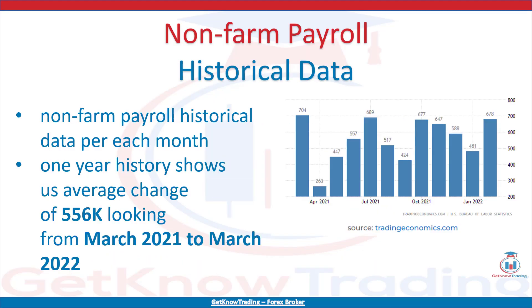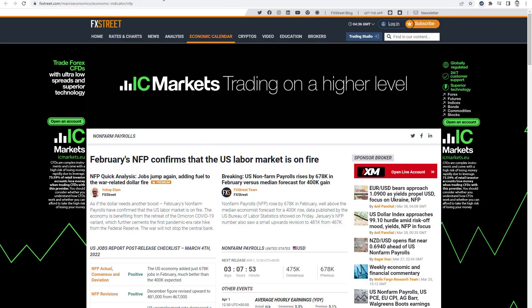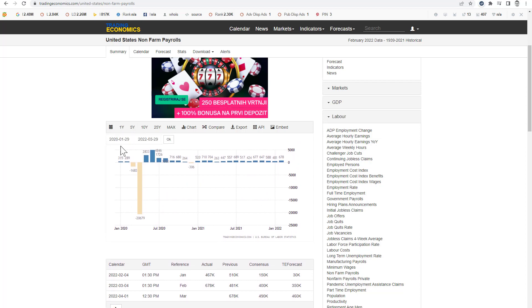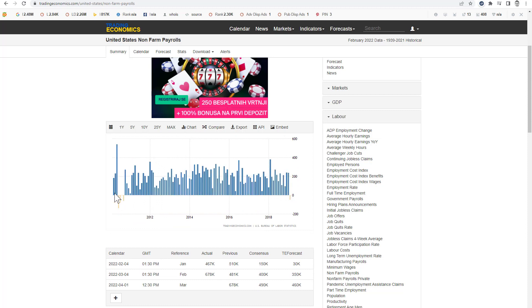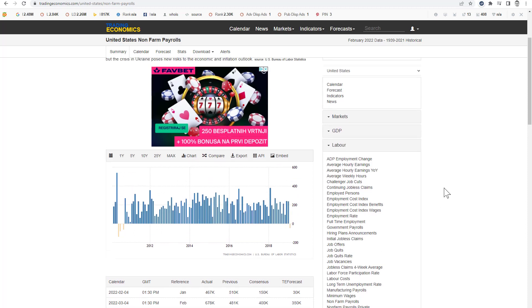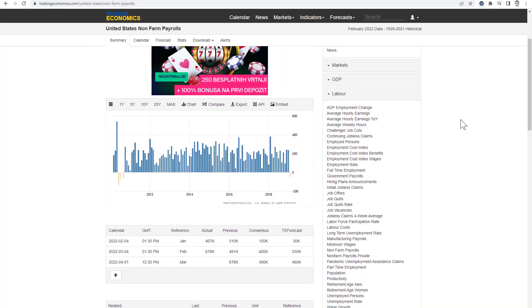Let me show you non-farm payroll historical data, where you have a year's data on the graph. You can see non-farm payroll historical data per each month, and above each column you have a number in thousands. Last month's change was from 481,000 to 678,000. The one-year NFP history shows an average change of 556,000, looking from March 2021 to March 2022. The 2-year historical data shows that April 2020 was the worst period with negative results because of Covid. If you remove 2020 with its large negative data, you can see the previous 10 years of NFP data fluctuation, which was mostly positive for the US market, with only occasional negative results.